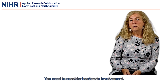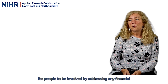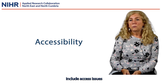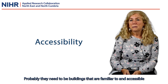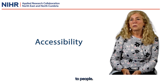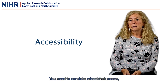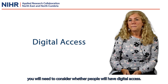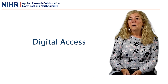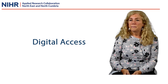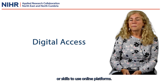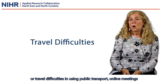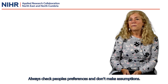You'll need to consider barriers to involvement and how to maximise opportunities for people to be involved by addressing any financial or practical barriers. Things you need to consider include access issues — where meetings will take place if they're face-to-face, probably in buildings that are familiar to and accessible to people. You need to consider wheelchair access, accessible toilets, hearing loops and so on. If they're online, you will need to consider where people will have digital access. Not everyone has a smartphone or tablet, or may have restricted data allowances or no access to Wi-Fi. Some people don't have the confidence or skills to use these platforms, whilst for others who may have a caring responsibility or difficulties in using public transport, online meetings are better. Always check people's preferences and don't make assumptions.